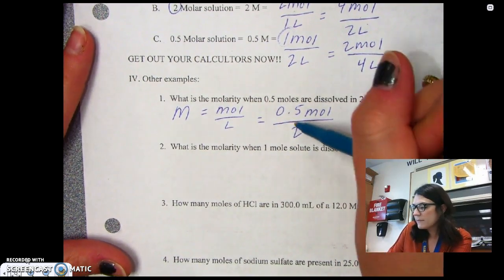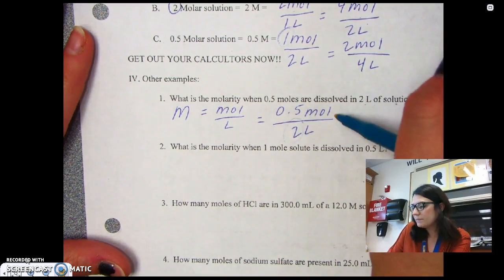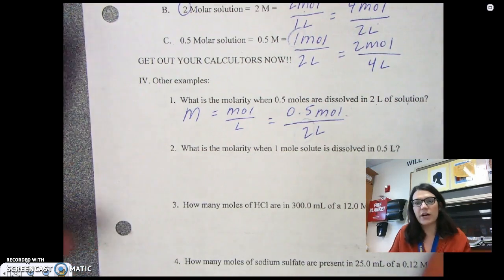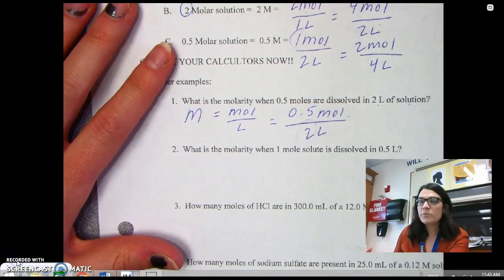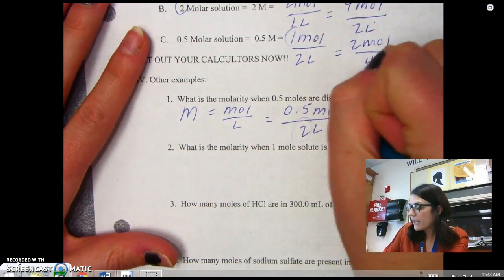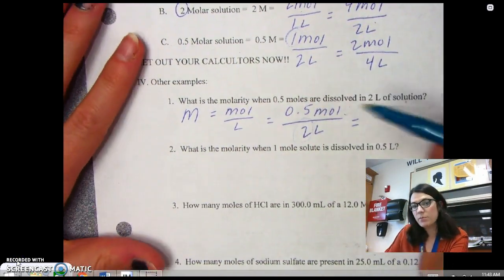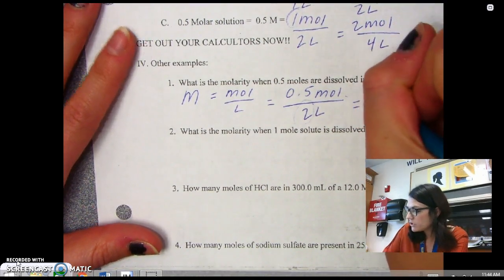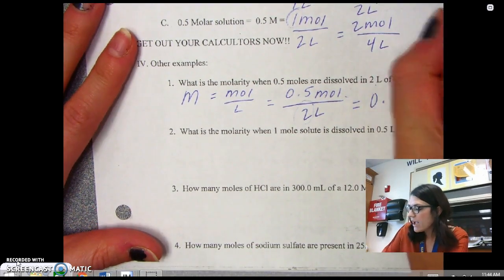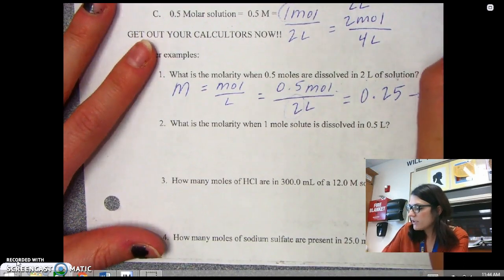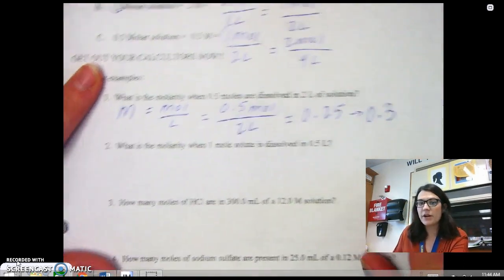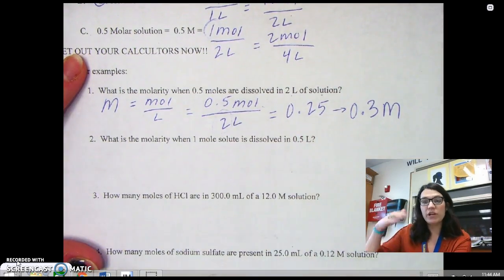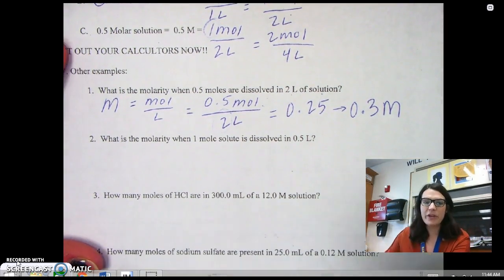Now, since my denominator is bigger than my numerator, I would expect this value to be less than one, and it does turn out to be that way because 0.5 will go into two four times, so this answer is going to be 0.25, but with significant figures, it'll give us a 0.3 molar solution, and we can just put an M for molarity.